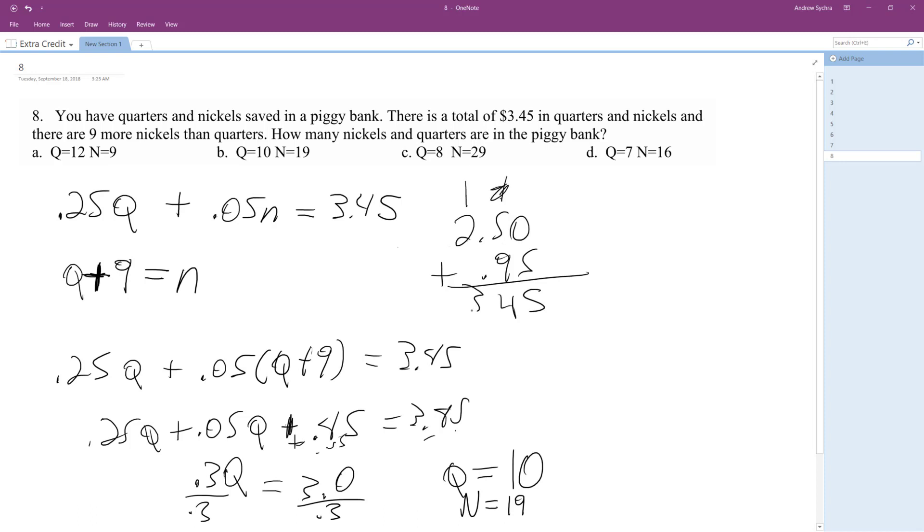It ends up being 345. Yeah. So 10 quarters, 19 nickels. All right. I hope that helps you out. Thanks for watching. Have a great day.